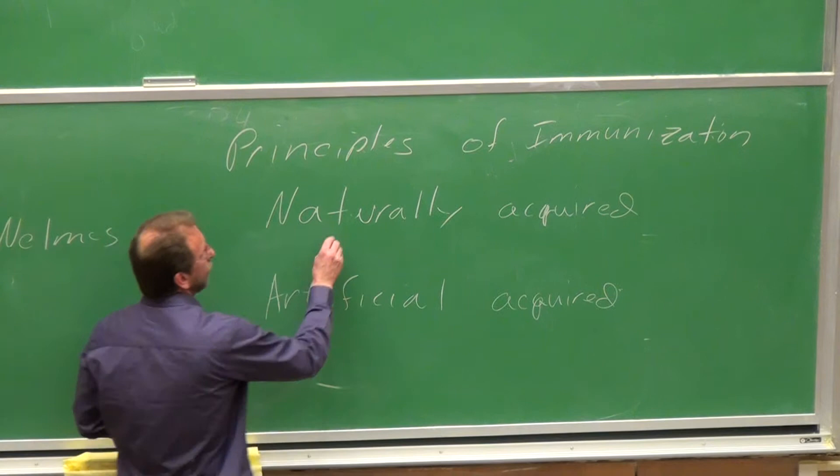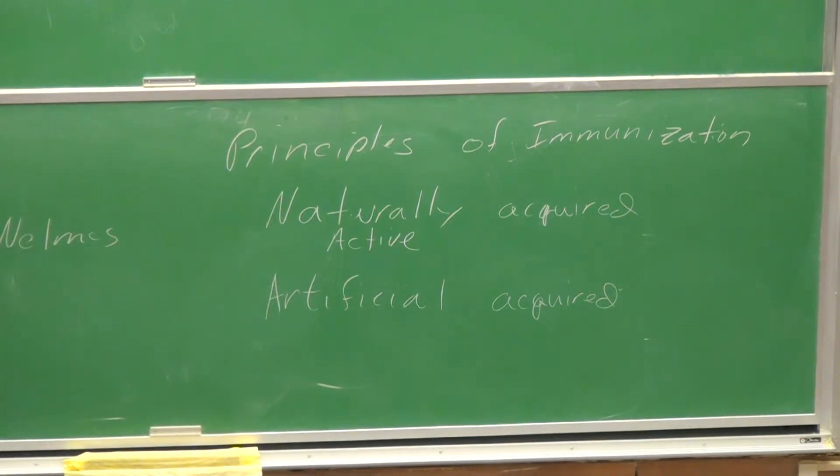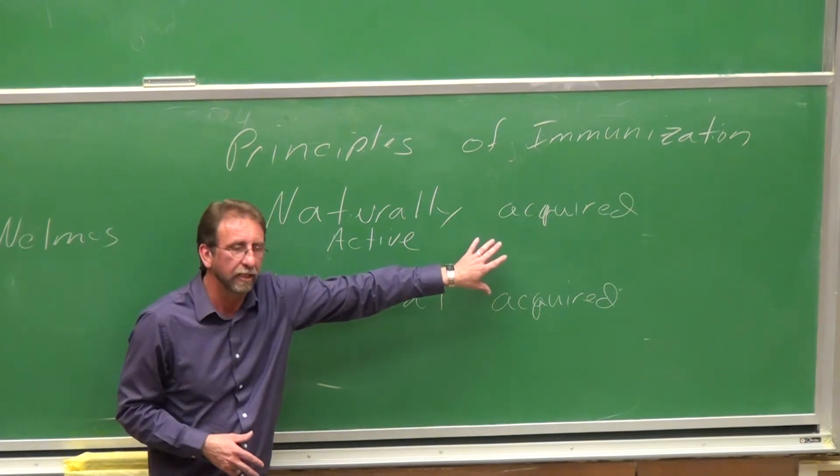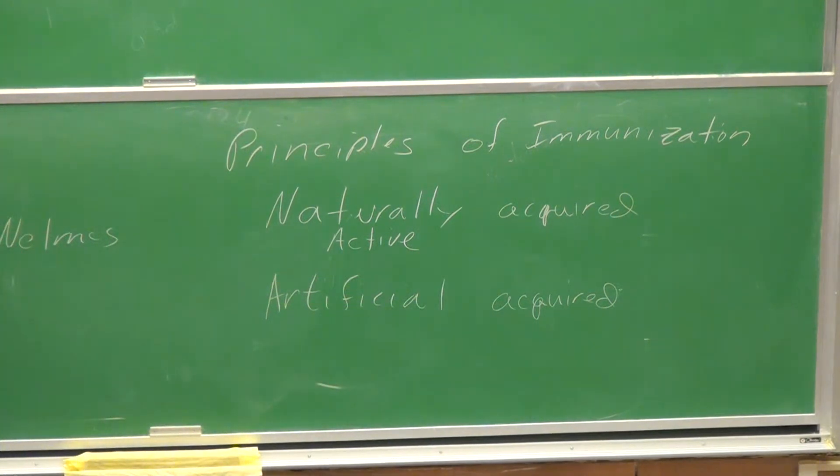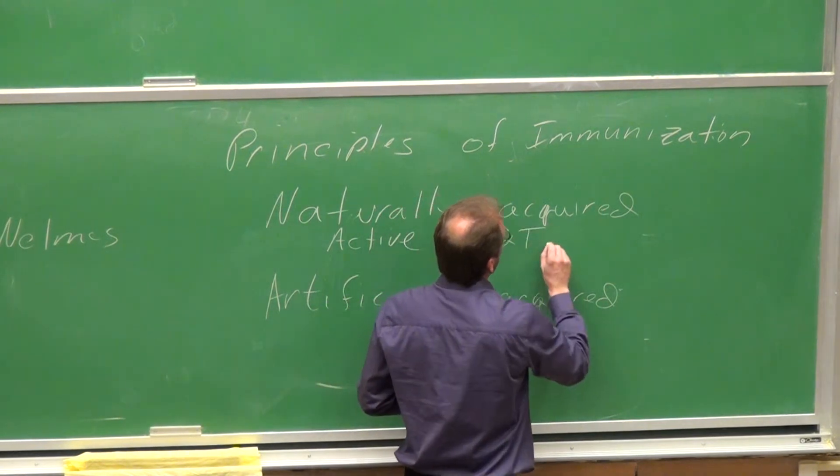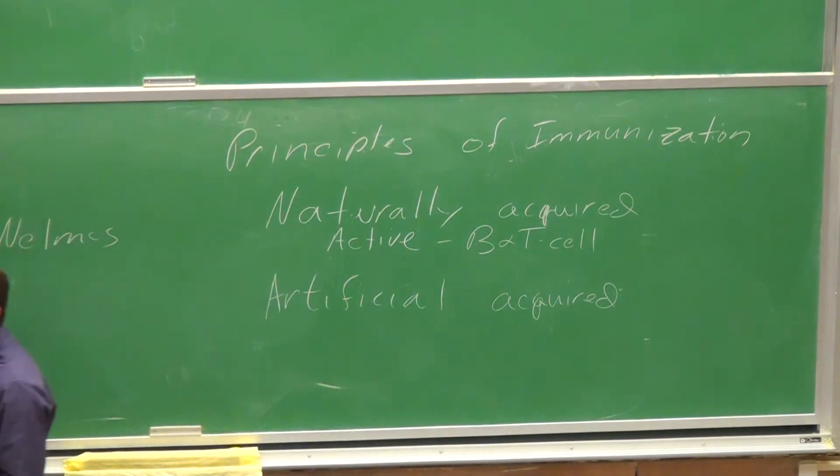You can have an active, naturally acquired immunization. Again, when you are exposed to an agent, an antigen naturally, and your body now is responding and producing antibodies to it. So in this case here, you've got B and T cell activity. You're actually responding to the agent.